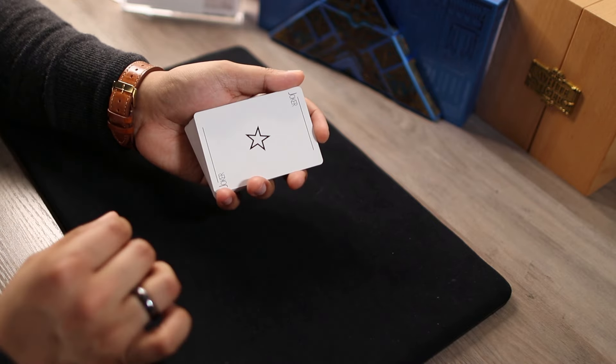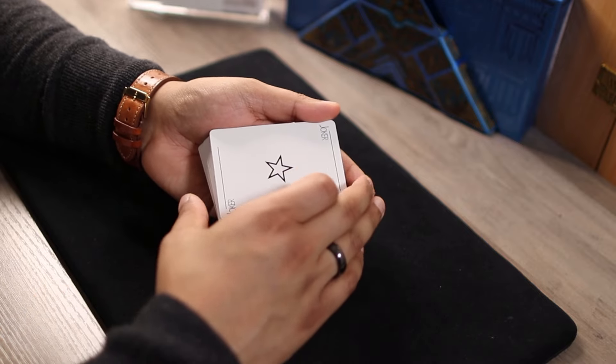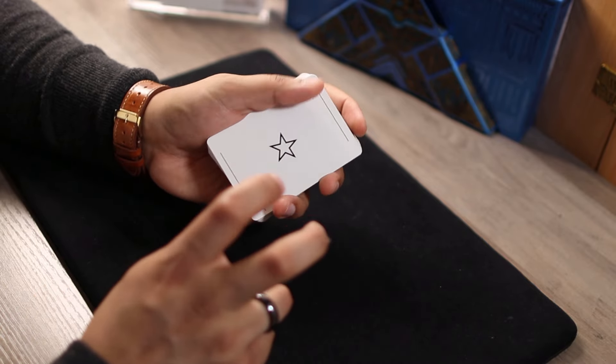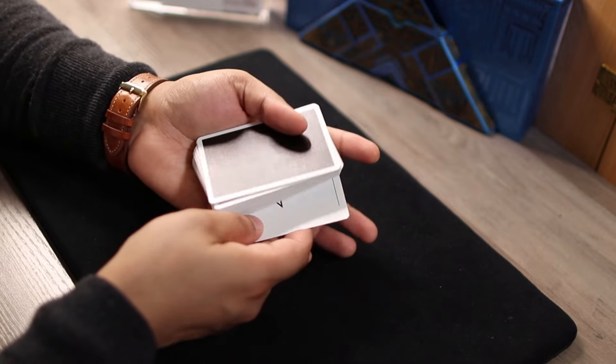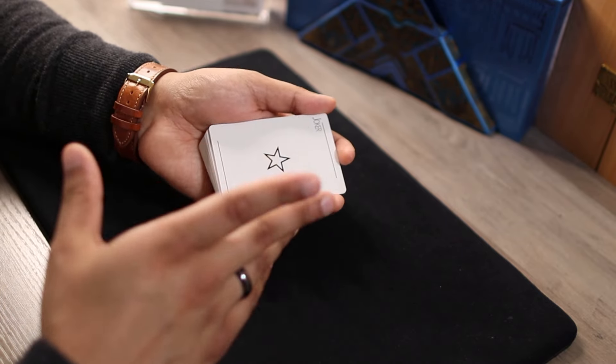You're going to take the jack of diamonds and sandwich it face down between the two jokers, like this. Take this whole packet of three and put it on top. You tell the spectator you're going to lose it somewhere in the center of the deck, and you're not really losing it. What you're doing is controlling this top card to the bottom.